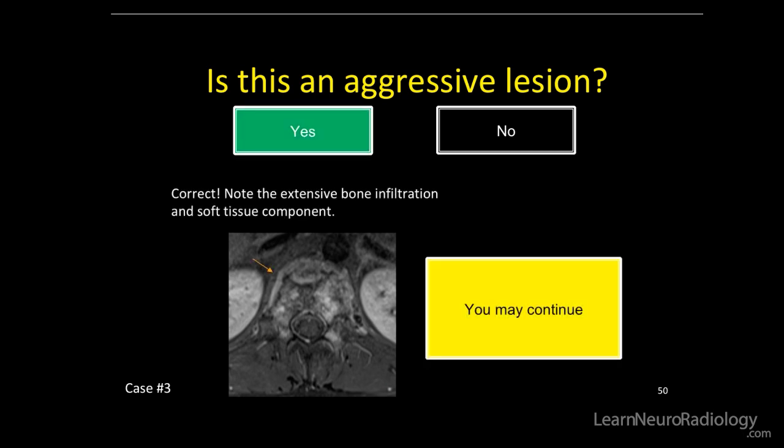There is extensive bone infiltration with ill-defined margin, cortex destruction on the CT, and there is a soft tissue component in the paraspinal space.